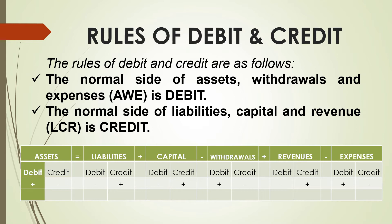The normal side of assets, withdrawals, and expenses is debit. You have the mnemonic AWE, which means that if you're going to increase assets, withdrawals, and expenses, you're going to debit — hence it is called the normal side. On the other hand, the normal side of liabilities, capital, and revenue — or LCR — is credit. When you say normal side, that is the side of the T-account you use to increase that particular account. Presented here in the table is the expanded accounting equation.